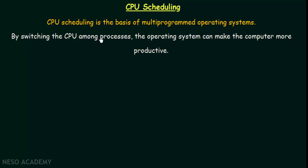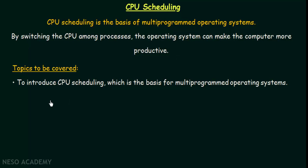Don't worry if you don't understand what this means right now — it will become clear when we go into the details of CPU scheduling. The first thing we are going to do is introduce CPU scheduling, which is the basis of multi-programmed operating systems. We will see what it actually means, what it does for us, and how it makes our computer more productive.